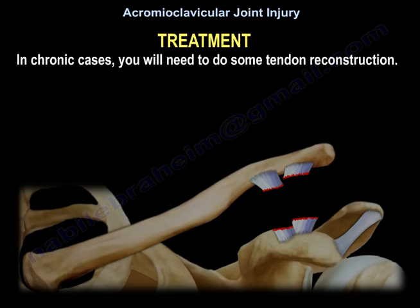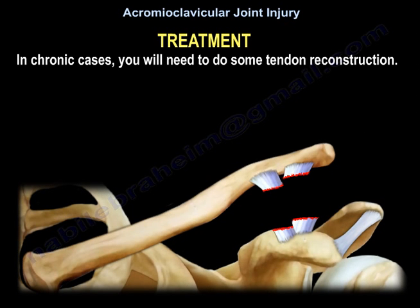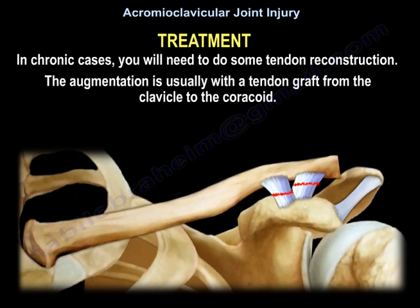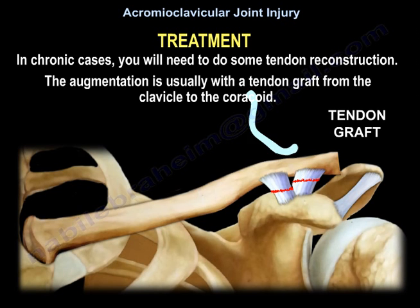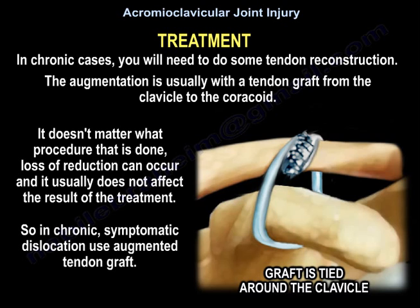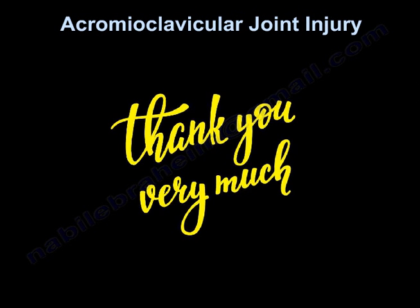For chronic cases, tendon reconstruction is needed — augmentation is usually with a tendon graft from the clavicle to the coracoid. Regardless of the procedure used, loss of reduction can occur but usually does not affect the treatment result. For chronic symptomatic dislocation, use an augmented tendon graft.